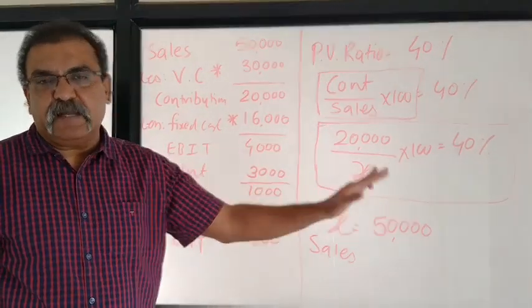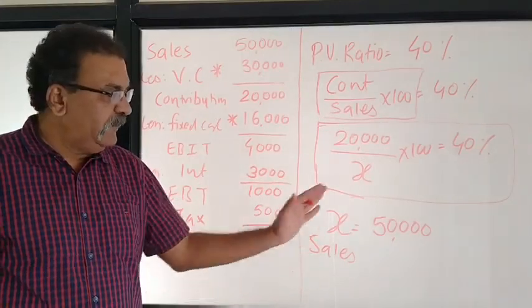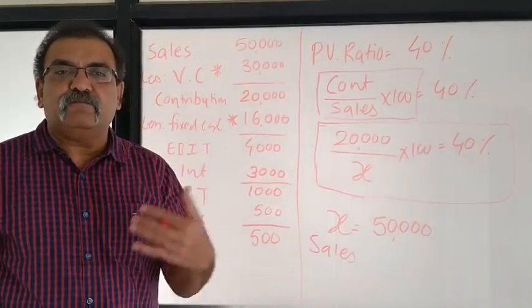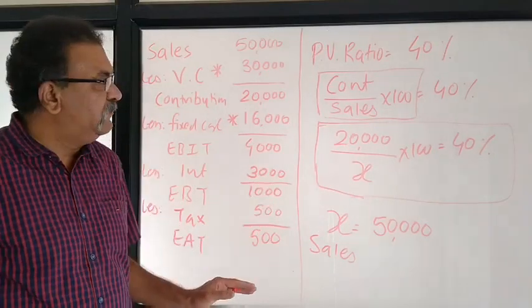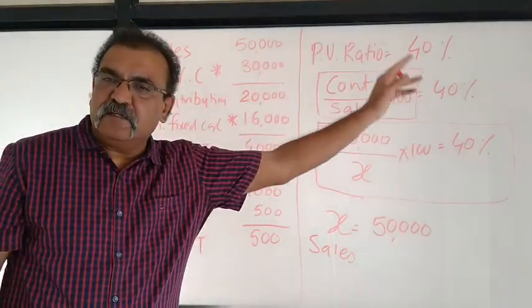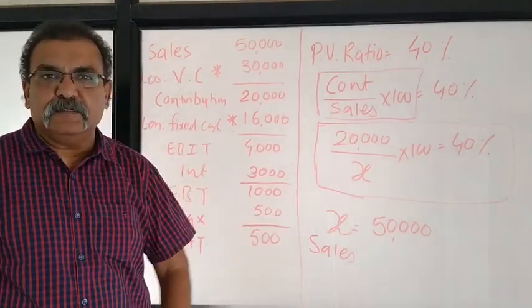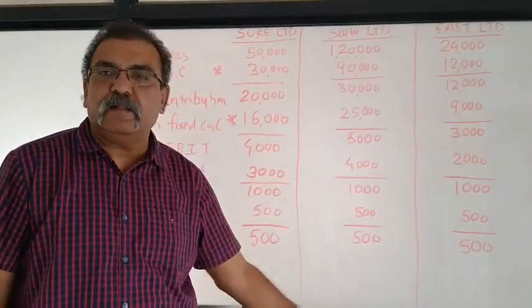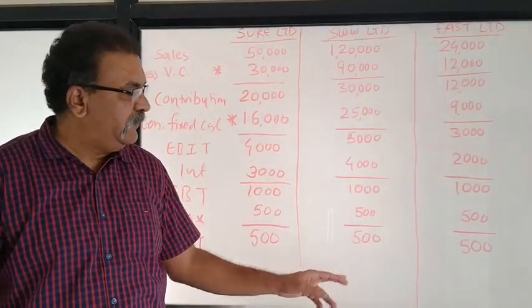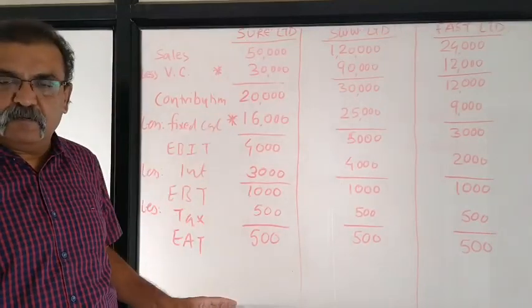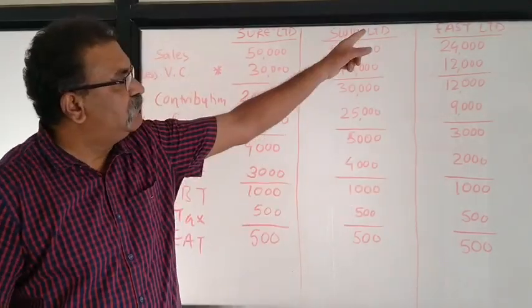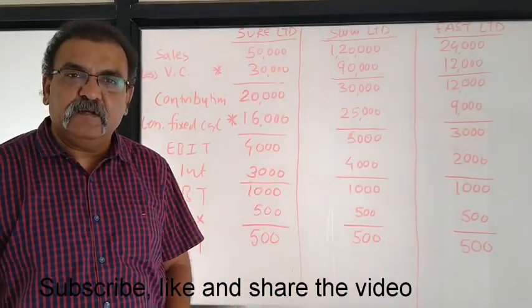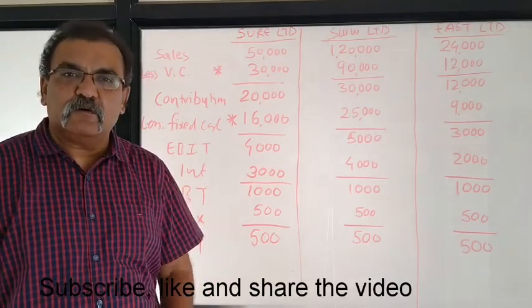You can now make the Slow Limited and Fast Limited income statements using the same steps applied for Sure Limited. I will give you the final income statements for Slow Limited and Fast Limited so you can compare and cross-check your answers. Feel free to ask your queries through comments or through WhatsApp. Thank you.